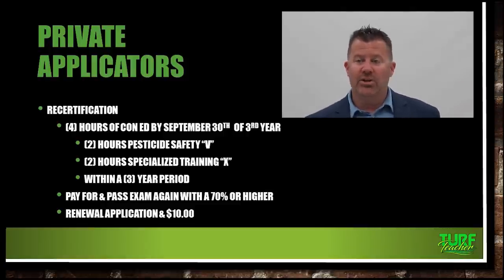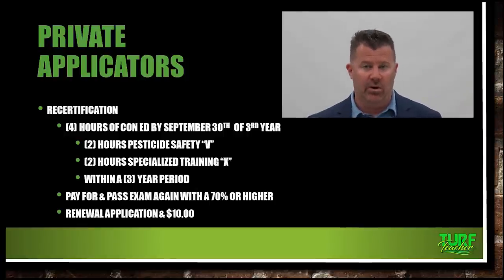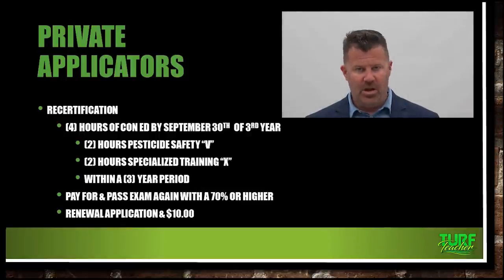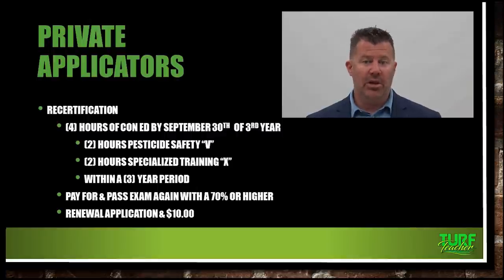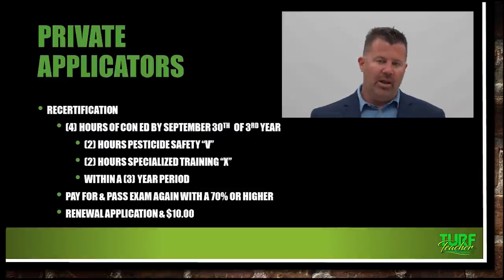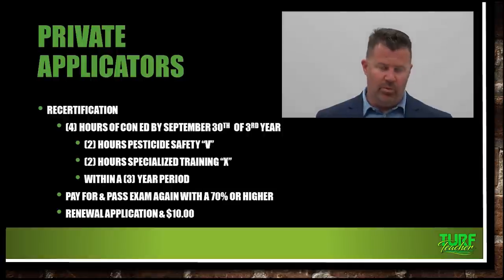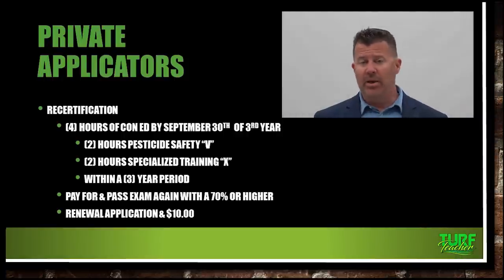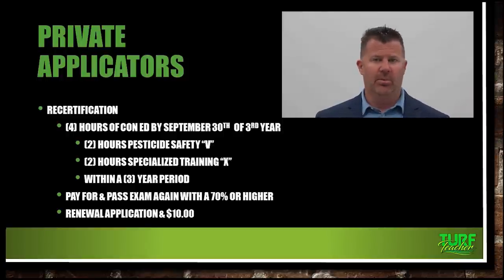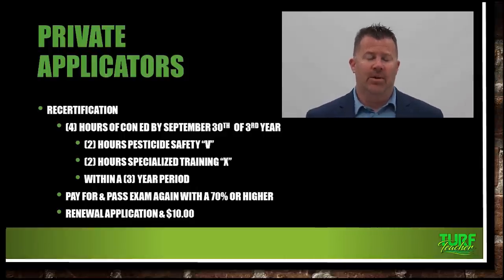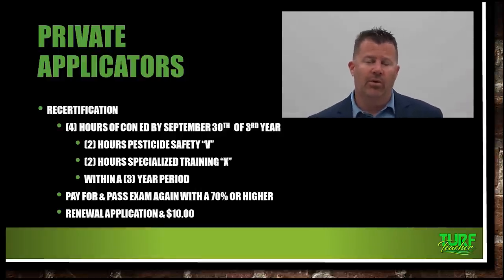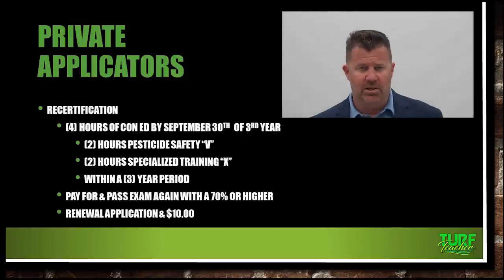With irrigation, being an irrigation contractor, we've got to have 10 hours a year. As a landscape contractor, we've got to have seven CEUs a year. Commercially for pesticides, I have to have 10 CEUs but over a five-year period. Private applicators need four hours within three years; commercial applicators need 10 hours within a five-year period. If you don't get your four hours of CEUs, you can pay the $10 and sit and take the 50-question exam again — a lot of people do that.